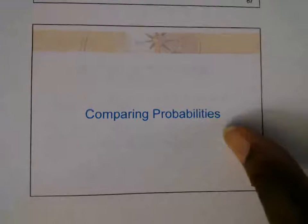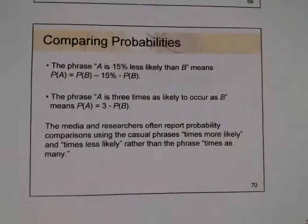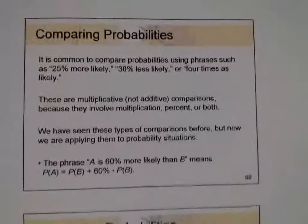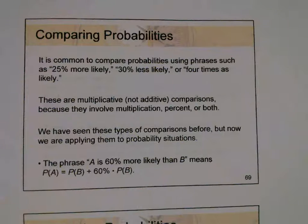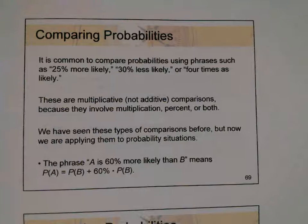This is the last thing I left off in the regular class. So let's talk about how to compare probabilities. It is common to compare probabilities using phrases such as 25% more likely, or 30% less likely, or four times as likely. These are what we call multiplicative and not additive comparisons because they involve multiplication, percent, or both.